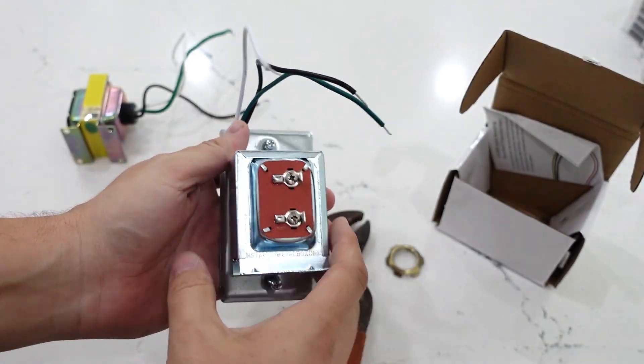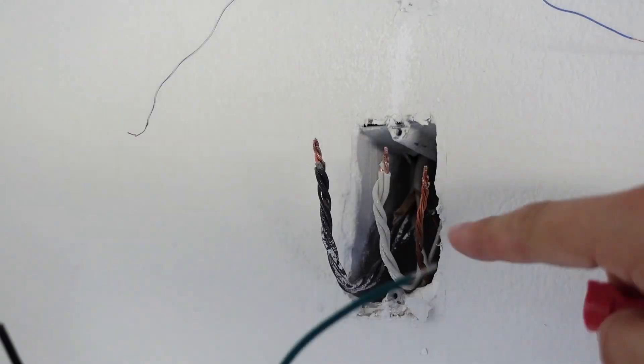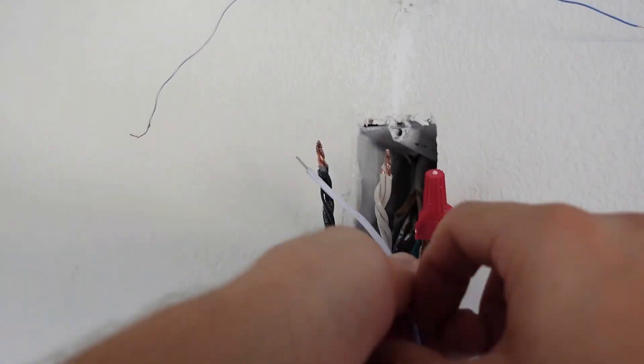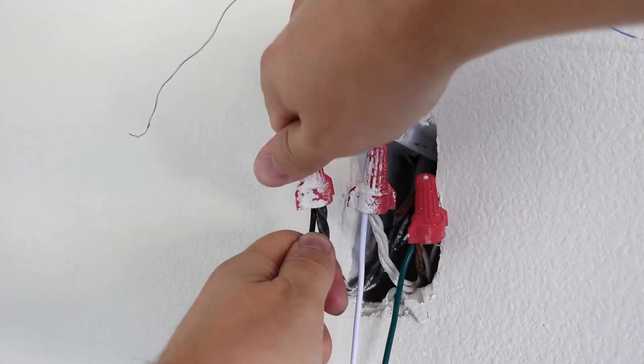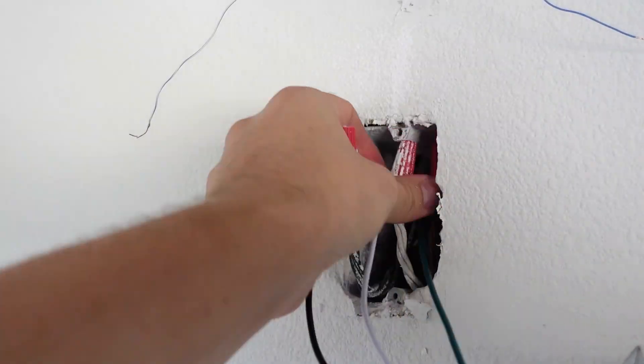Like that. Now we're going to wire it up and mount it to the wall. So green goes to ground, white goes to white, and black goes to black. Pretty straightforward. Then tuck them all back in there until you've got plenty of room.